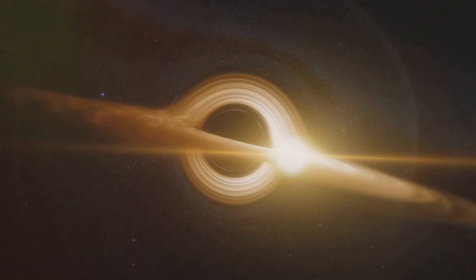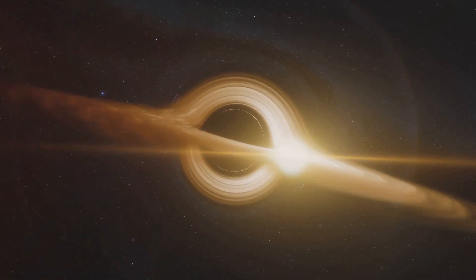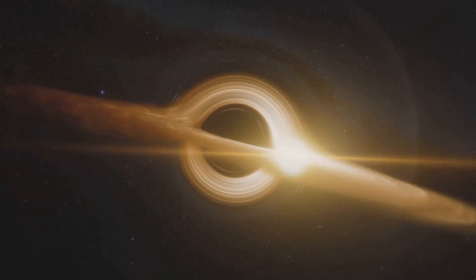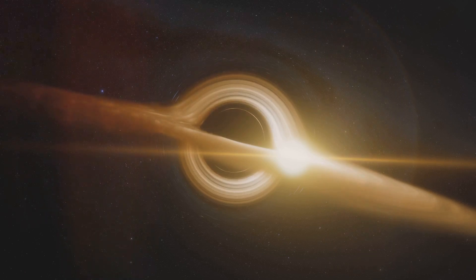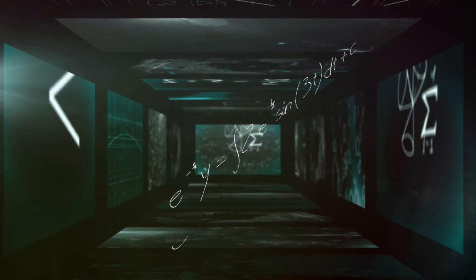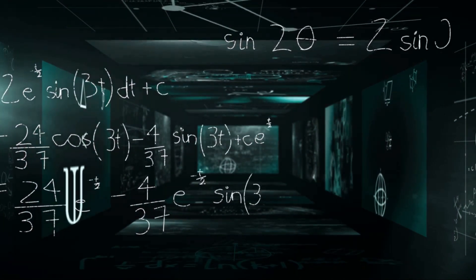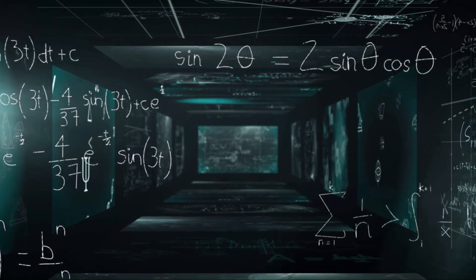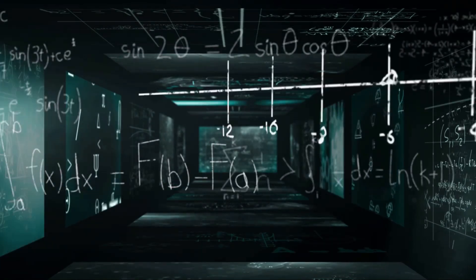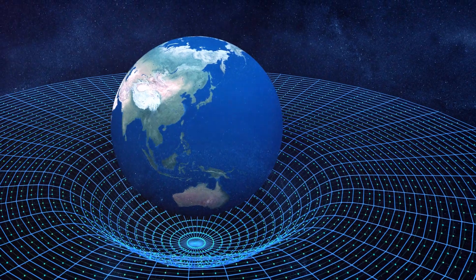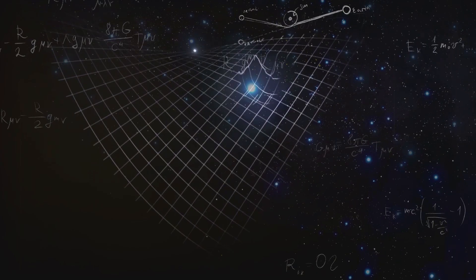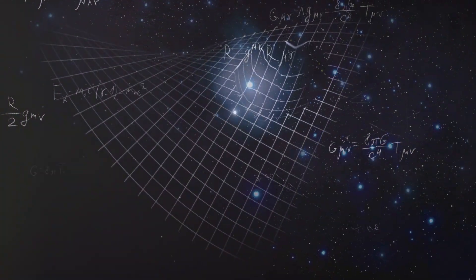Let's take a simple example. Imagine two observers, one stationary on Earth and another moving at high speed in a spaceship. If both observers were to witness a star explode, they would perceive the event happening at different times. The stationary observer might see the explosion now, while the observer in the spaceship might perceive the same event as happening in the past or the future, depending on their direction of travel.